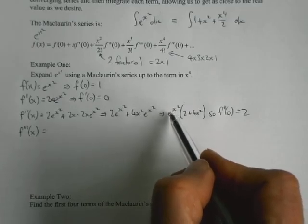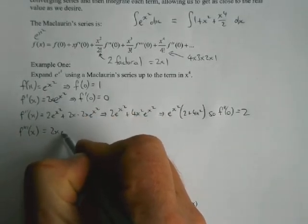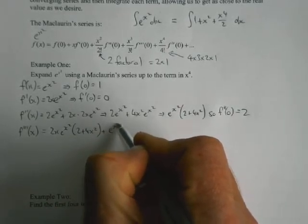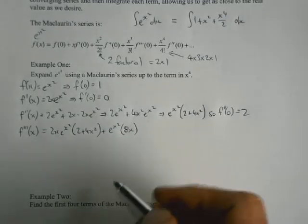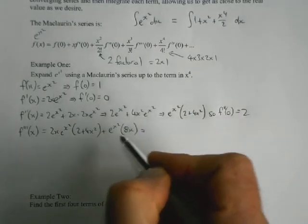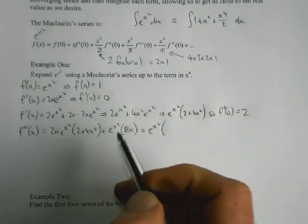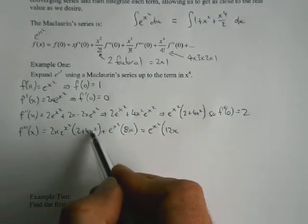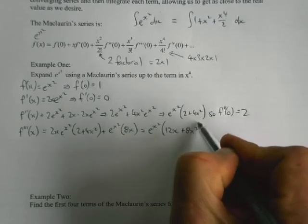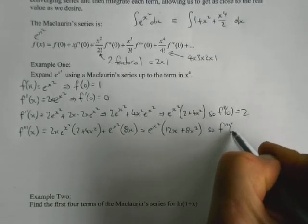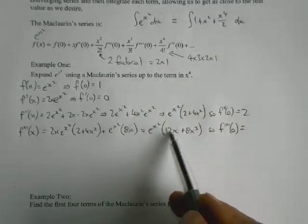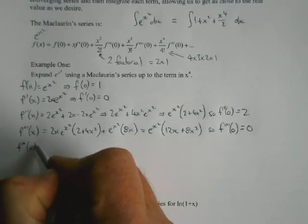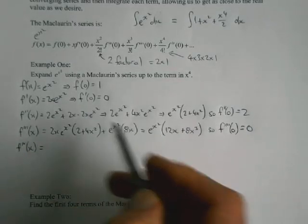So third derivative. I'm going to differentiate this thing here, which again is a product rule, so the derivative of the first bit times the second bit plus the first bit times the derivative of the second bit. And then if I pull out e to the x squared again at the front, what am I left with? I've got 8x from there, and 4x from there is 12x. And then I've got 2x times 4x squared is 8x cubed. And my f triple dash of that is 0, if I put 0 into this, 0, 0, 0, all goes to 0.